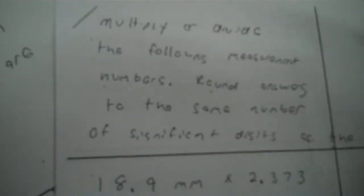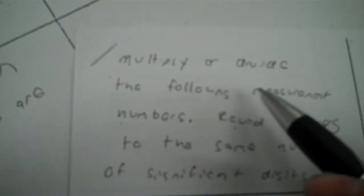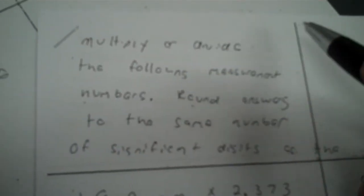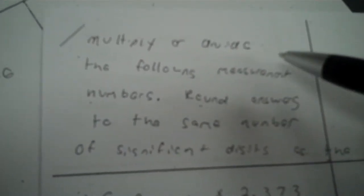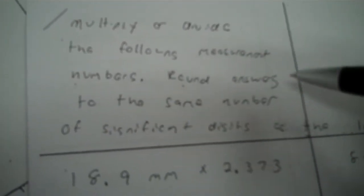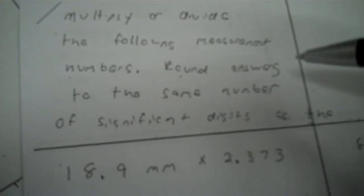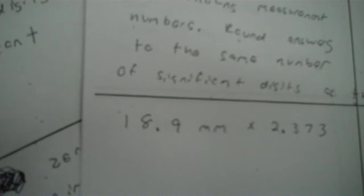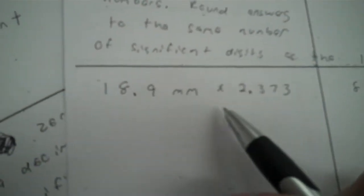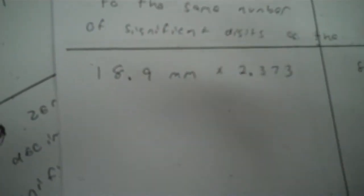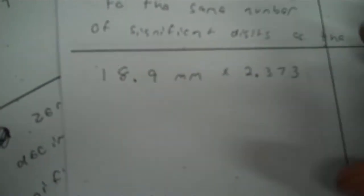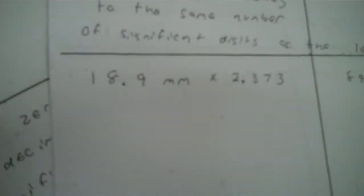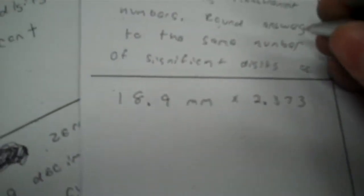Okay, this looks like it's pretty easy but you got to read directions. You're going to multiply or divide the following measurement numbers, round answers to the same number of significant digits as the least accurate number. A third grader could multiply on a calculator, but you got to know what you're rounding to.